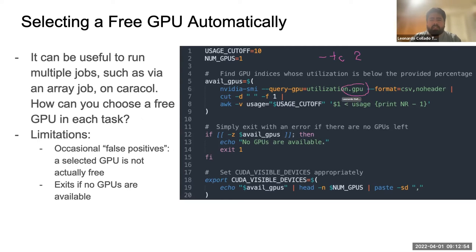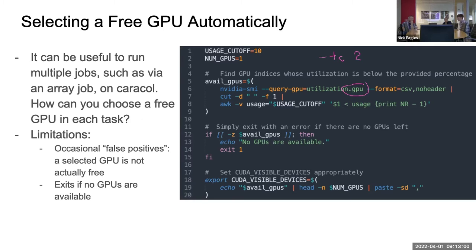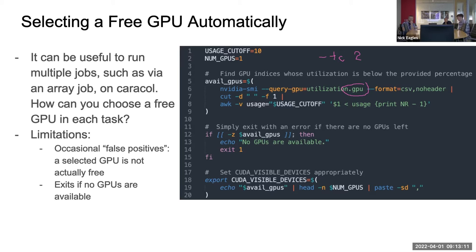Someone asked: does this change the name depending on what GPU you're using? No — this is column output from the nvidia-smi command, so it's pretty standard and works for any CUDA-based software on the cluster.